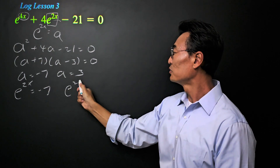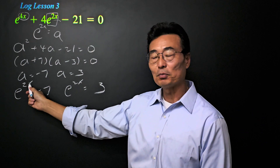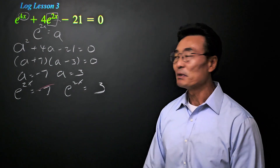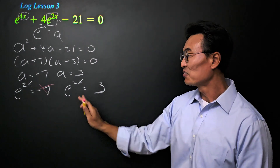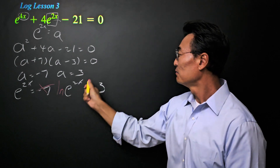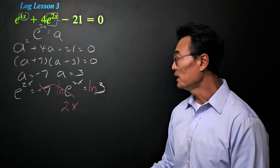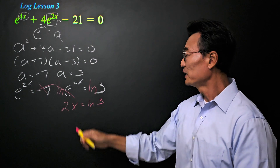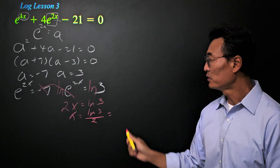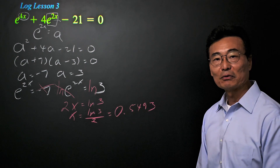However, we're not finished — we're not solving for a, we're solving for x. So I'm going to plug e to the 2x back in for a. We get e to the 2x equals negative 7, and also e to the 2x equals 3. Anything to an exponent cannot be a negative value, meaning e to the negative 7 cannot be part of our solution, so we focus on e to the 2x equals 3. Taking the natural log of both sides, we get 2x equals natural log of 3, where x equals natural log of 3 all over 2, or approximately 0.5493, rounded to four decimal places.